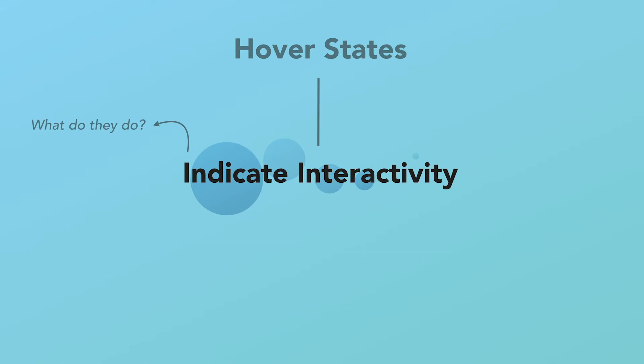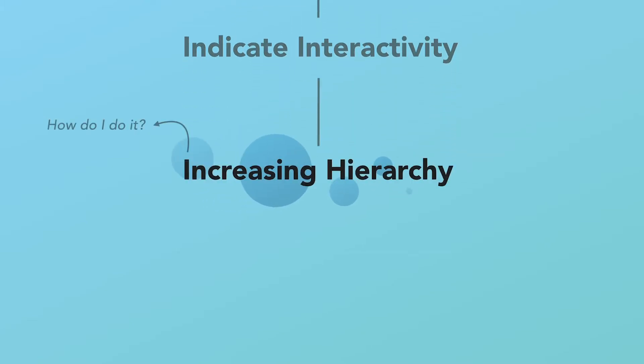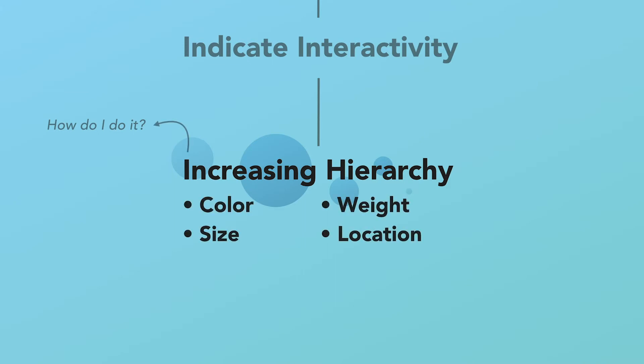So then the question is, what's the best way to indicate interactivity? You should do this by increasing its visual hierarchy — in just the normal ways that you increase visual hierarchy in designs in general. You could increase its color, so maybe it's desaturated and you make it more saturated, or it was black and white and you change it to color. You could make it bigger. If it's type, you could increase its weight, or move it a little — to the left or to the right. The idea is that you want to increase the hierarchy.